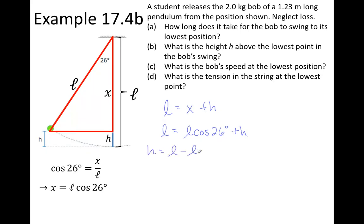H will just be L minus L cosine 26 degrees. And so the maximum height above the bottom of the bob's swing is going to be 0.124 meters.